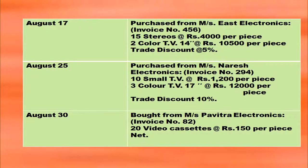Some more transactions are there in Harsha Electronics. On August 17th from Messrs. East Electronics: 15 stereos at rupees 4,000 per piece and 2 color TVs at rupees 10,500 per piece, trade discount at 5 percent. Then on August 25th, purchase from Messrs. Naresh Electronics: 10 small TVs at rupees 1,200 per piece and 3 color TVs at rupees 12,000 per piece, trade discount 10 percent.